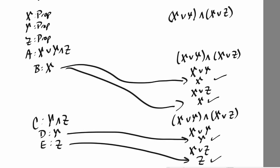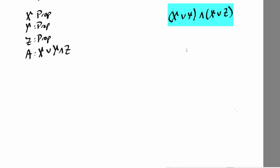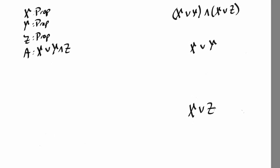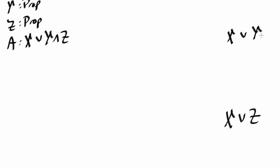Now let's go back to earlier in the proof before we really got started. Recall that we started by splitting the assumed disjunction into two cases: the assumption of x and the assumption of y and z. We could have instead split the conjunction we needed to prove into two subgoals first. Let's consider what would have happened if we had done that. If we split this conjunction into two subgoals, we'd have one subgoal to prove x or y and one to prove x or z. To prove a disjunction we can either prove the left or the right. If we decide to prove the left at this point we'll be stuck, and likewise if we decide to prove the right y we'll also be stuck. There's not enough information in the assumptions at this point to decide if we can prove x or we can prove y. So we still need to do the case split on assumption a.